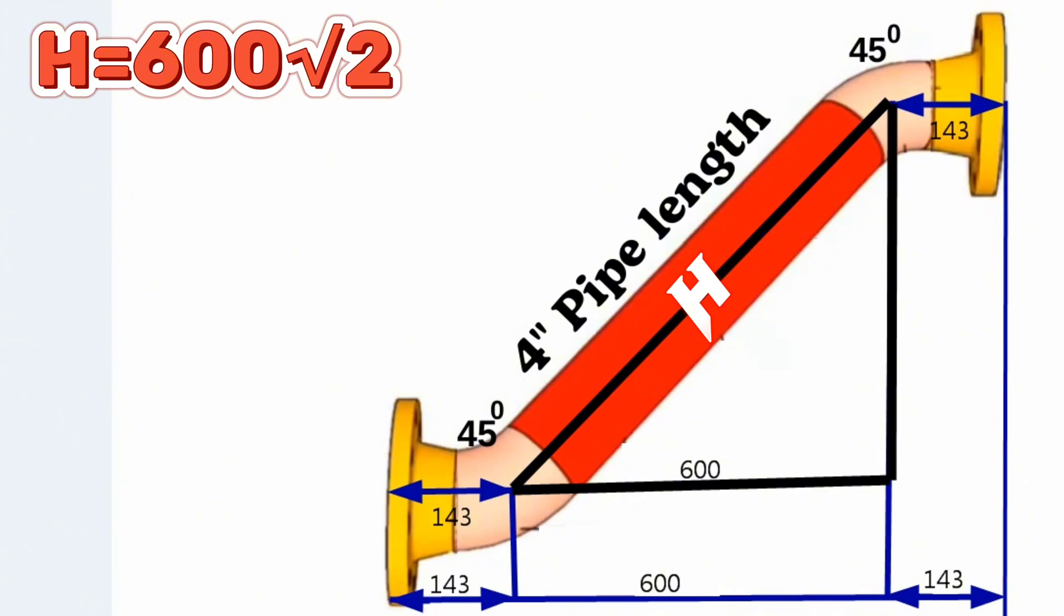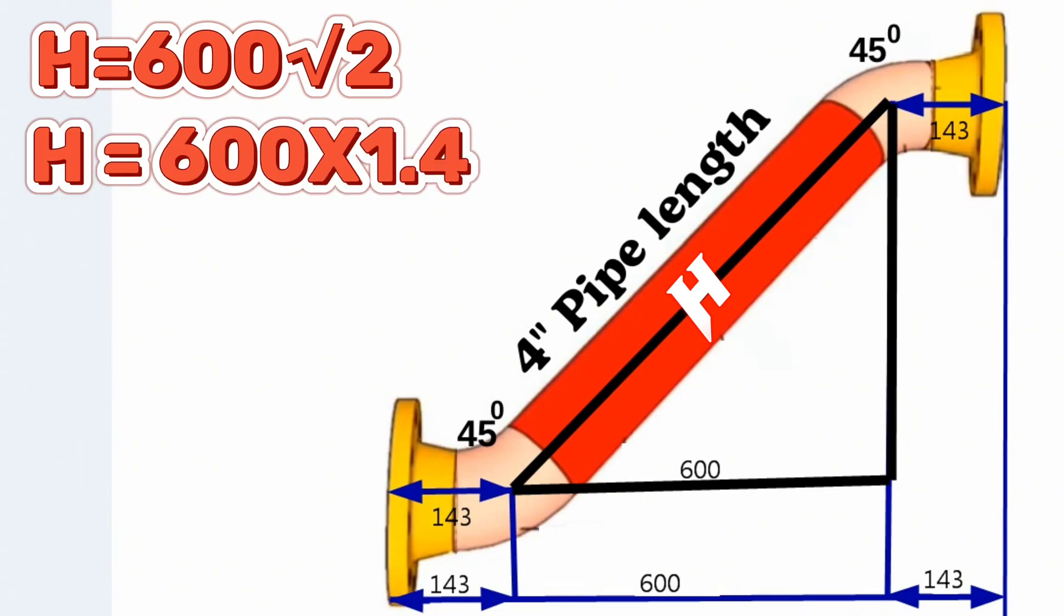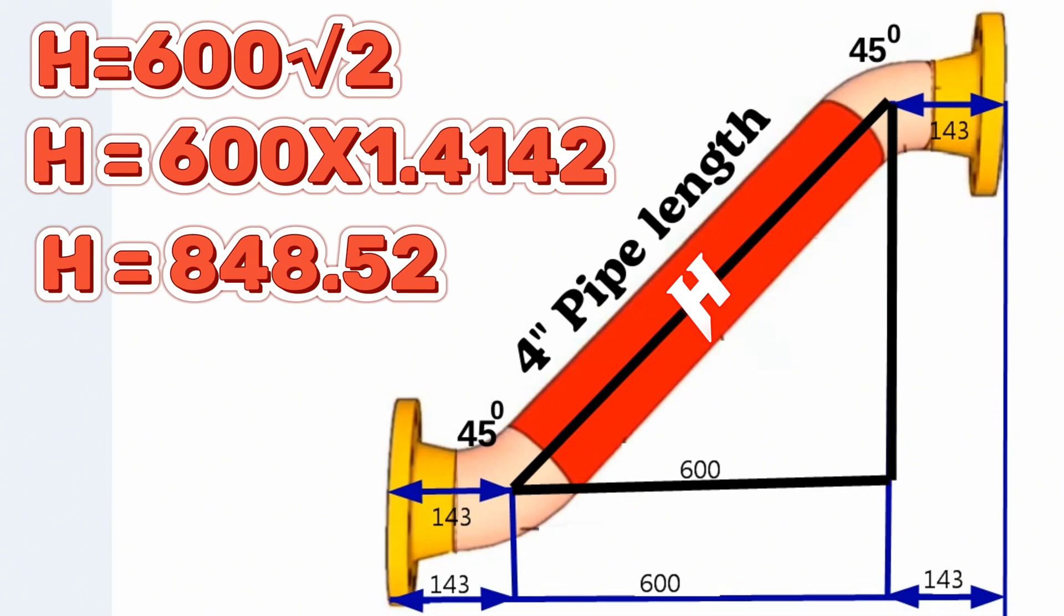We are continuing to calculate. h is equal to 600 times 1.4142, and h equals 848.52.